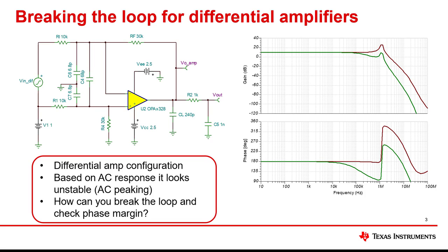Here's an example of a differential circuit that has a few stability concerns. Notice that there is capacitance on the inverting input with respect to ground as well as capacitance on the amplifier output.